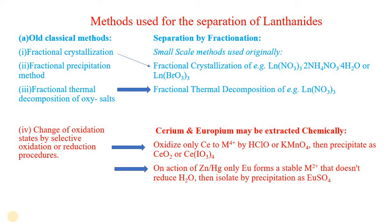A brief review regarding the separation of lanthanides: methods used are of two types — old classical methods and modern methods. Old classical methods include fractional crystallization, fractional precipitation, fractional thermal decomposition of oxy acids, and change of oxidation state by selective oxidation-reduction procedures followed by precipitation.